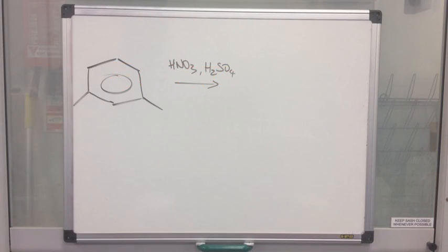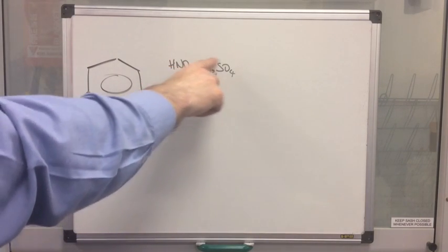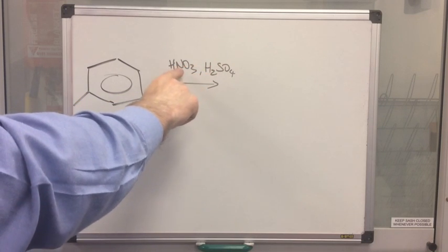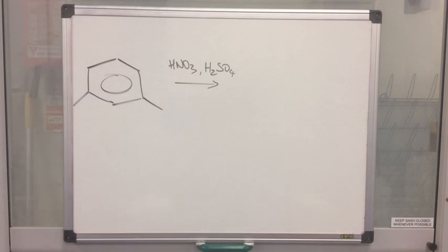Now obviously in the exam, they're not going to be friendly and just ask you to repeat the mechanism that's in your notes. Every student in the country is going to have what you've just seen there, I would imagine. So they're going to give you a slightly more complicated looking molecule. So we've got these methyl groups here at positions one, two, three. So it would be three dimethylbenzene. And you can see there it's been reacted with nitric and sulfuric acid. So hopefully straight away you think, yep, that's the nitrating mixture, I know what's going to happen here.